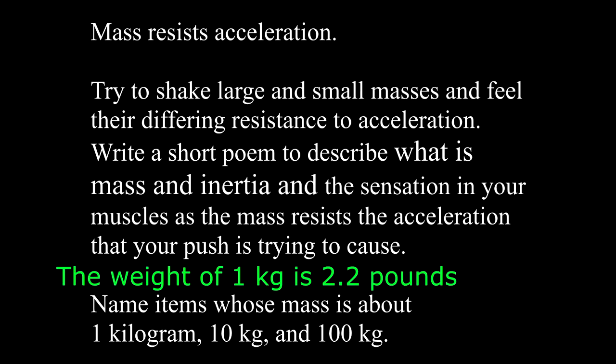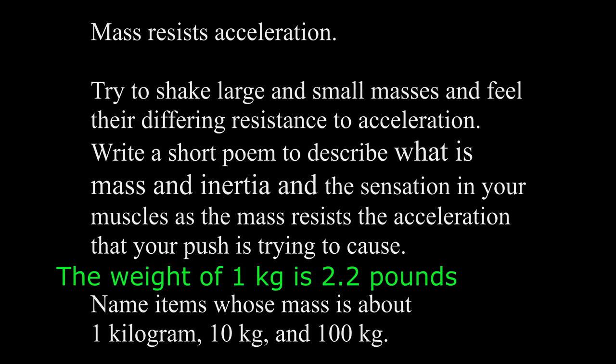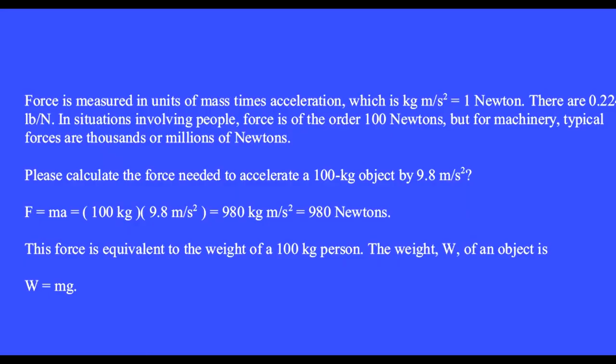The weight of 1 kg is 2.2 pounds. Force is measured in units of mass times acceleration, which is kilogram meter per second squared, and this is said to be 1 newton. A newton is a quarter or a fifth of a pound. In situations involving people, force is on the order of 100 newtons, but for machinery, typical forces are thousands or millions of newtons.